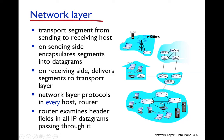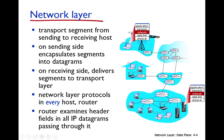On the sending machine, the network layer receives the segment from the transport layer, encapsulates it into a datagram by attaching a header, and sends it out. On the receiving machine, the network layer receives the data, detaches its header, and delivers the segment to the transport layer.